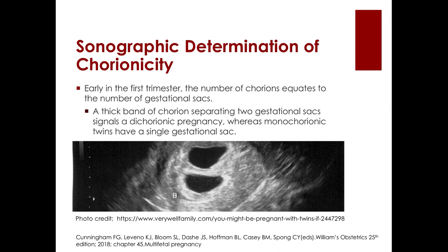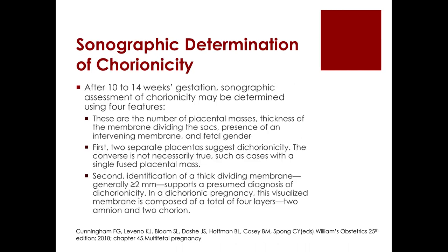For sonographic determination of chorionicity early in the first trimester, the number of chorions equates to the number of gestational sacs. A thick band of chorion separating two gestational sacs signals a dichorionic pregnancy, whereas monochorionic twins have a single gestational sac.